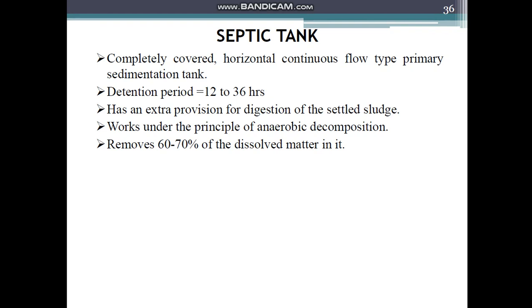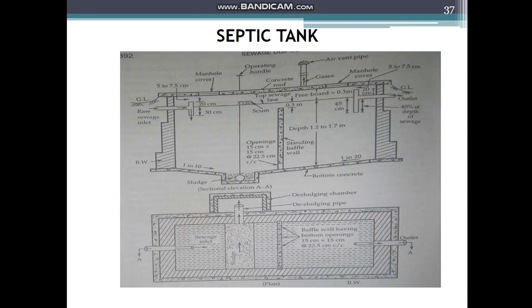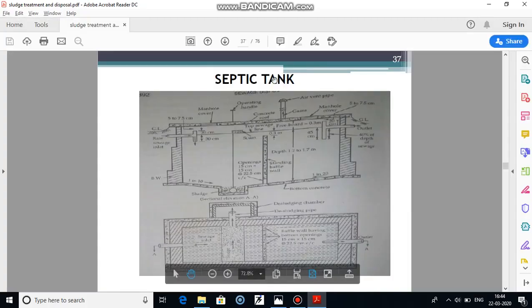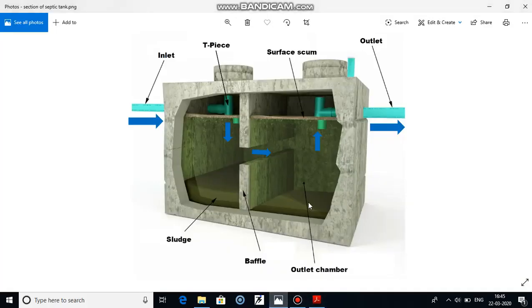Now I will show you the diagram of how the septic tank looks so you can get the construction details. This is a schematic diagram and also a 3D view of the septic tank. It has two chambers: the inlet chamber and the outlet chamber. Most of the sludge settles in the inlet chamber, and baffle walls are provided through which only the sewage effluent passes from one chamber to the other and then outside. There is also a scum layer and freeboard space.